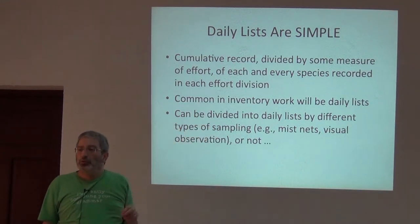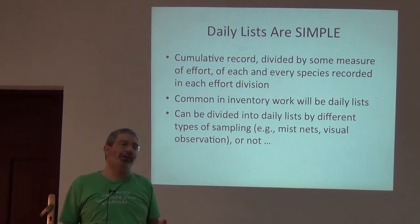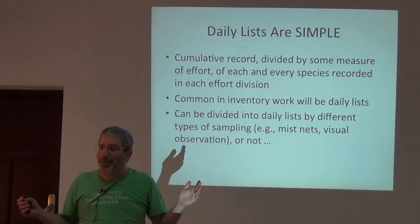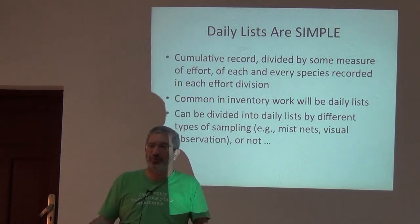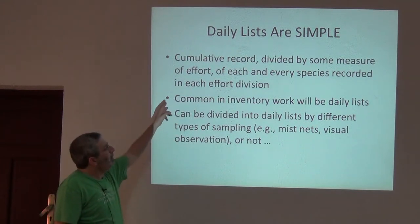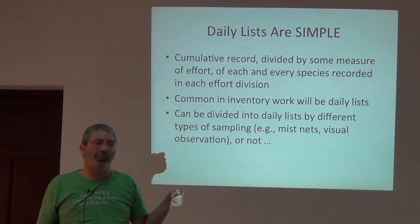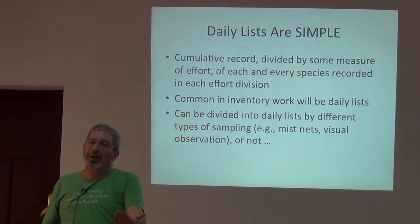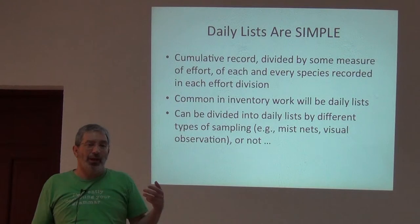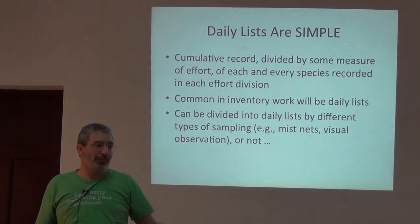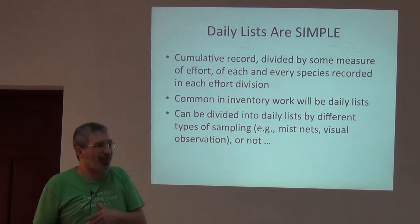Daily is the usual measure of effort. Usually, at least with vertebrates and plants, we don't do all our sampling in a single day — though you could imagine soil sampling where you go out, dig 50 soil samples, and go home. Usually it will be daily. You may also wish to do different daily lists by different types of sampling. For example, herpers might have a pitfall daily list, a diurnal herping daily list, and a nocturnal herping daily list. That allows somewhat better analysis, and it's not that hard to do.